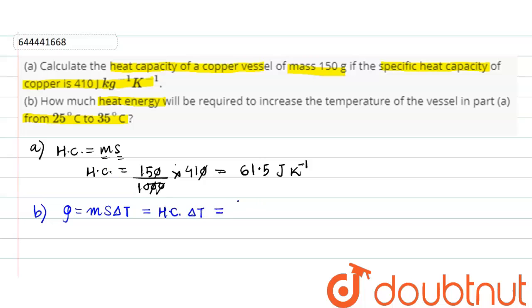From here, we know that heat capacity is 61.5 joules per kelvin and ΔT is 10. So the heat required comes out to be 615 joules.